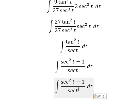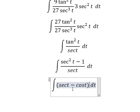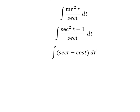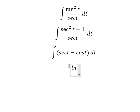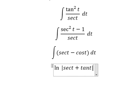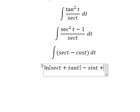So we have sec²(t) divided by sec(t), which gives sec(t), and 1 divided by sec(t) gives cos(t). The integration of sec(t) gives ln|sec(t) + tan(t)|, and the integration of cos(t) gives sin(t), plus the constant C.